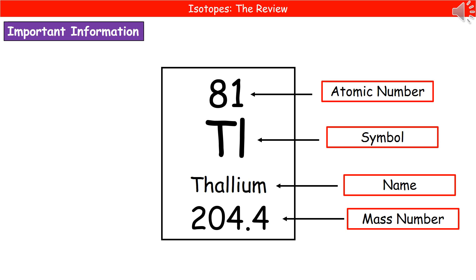So the larger of the two numbers is always the mass number. In this case, 204.4 at the bottom there. The smaller of the two numbers is the atomic number.